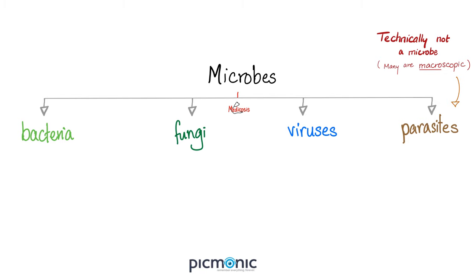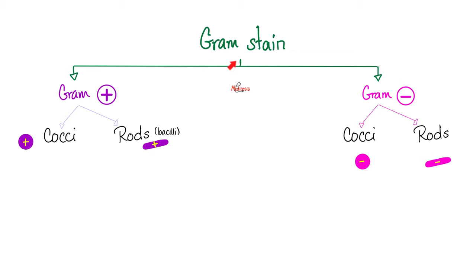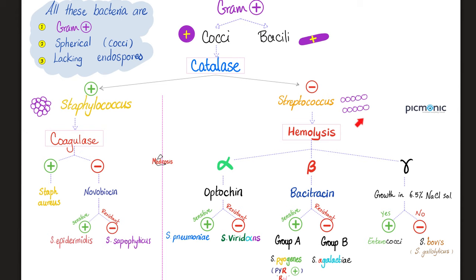Microbes are bacteria, fungi, viruses, or parasites. That's why microbiology studies bacteriology, mycology, virology, and parasitology. If it's a bacteria, use the gram stain — gram positive or gram negative, purple or pink? Streptococci are gram-positive cocci; they are spherical. Are streptococci cocci or bacilli? Of course they are cocci — they are spherical.